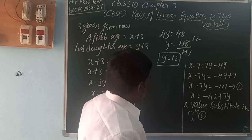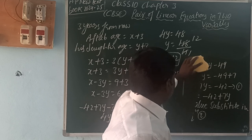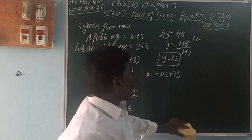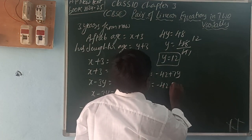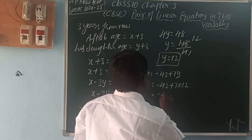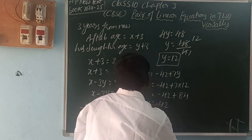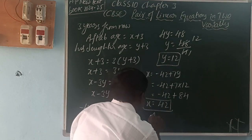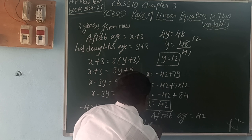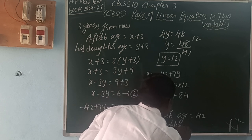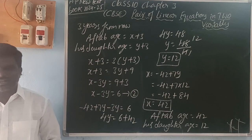Then the x value: x equals minus 42 plus 7y equals minus 42 plus 7 into 12, which is minus 42 plus 84, that equals 42. So x is 42. Therefore, Aftab's present age is 42 years and his daughter's present age is 12 years. Thank you for watching my videos, please subscribe and share with your friends. Thank you.